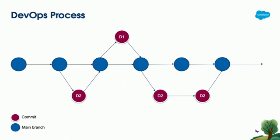I also showed you a graphic representation of how the DevOps process looks. The blue dots are the main branch — our production data, the base of the system. The red dots, labeled D1 and D2, represent developer one and developer two. In this process, we make small changes and add them on the go, not collecting a lot of packages at once. At any time we can merge to the main branch and have one source of truth for the whole process.